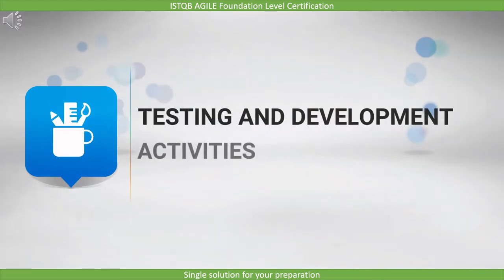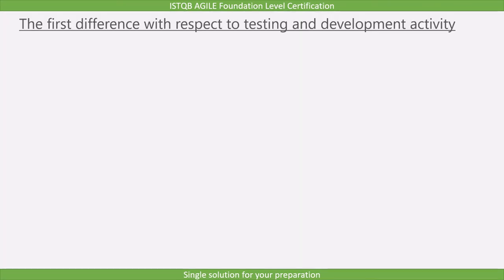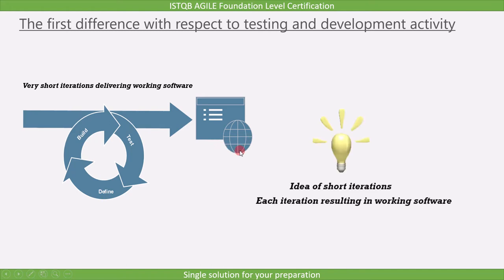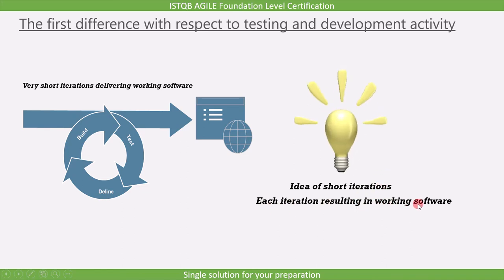In this lecture, we will cover testing and development activities. The first difference with respect to testing and development activity is that an agile model with very short iterations delivers working software. For example, just after the first iteration, which runs for a week, you may get the working software. Therefore, one of the main differences between traditional life cycles and agile life cycles is the idea of very short iterations, each resulting in working software that delivers features of value to business stakeholders.